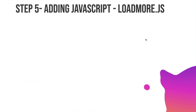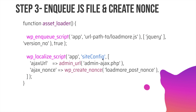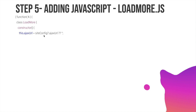Now we add the JavaScript in the load-more.js file. We create a class called LoadMore. Inside the constructor function, remember that we are passing the site config using wp_localize_script — the 'siteConfig' object is available to this file because of that function. We store that inside a variable and also store the nonce so we can send it along with our AJAX request. We then create a function which is called every time the load more button is hit.